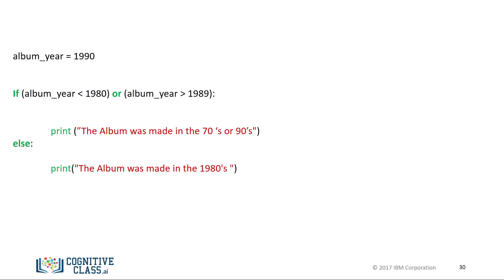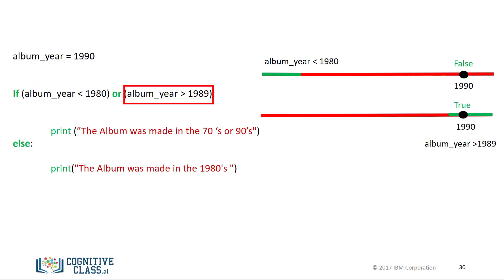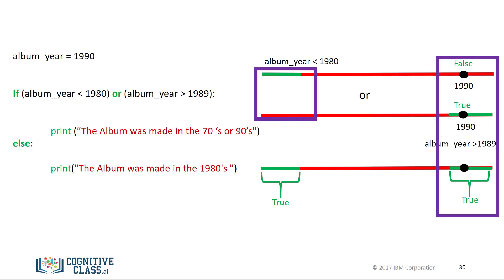The following lines of code will print 'this album was made in the 70s or 90s' if the variable album year does not fall in the 80s. Let's see what happens when we set the album year to 1990. The colored number line is green when the condition is true and red when false. In this case, the condition is true. Examining the second condition, 1990 is greater than 1989, so that condition is also true. In the final number line, the green region indicates where at least one statement is true. We see that 1990 falls in that area, so we execute the statement.